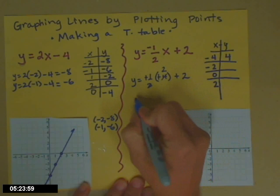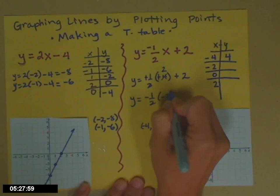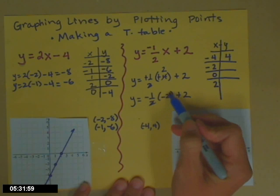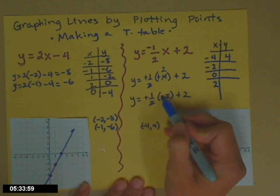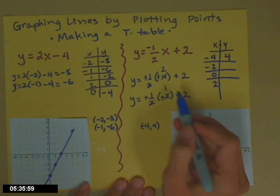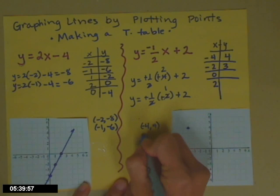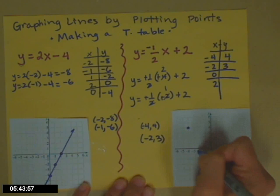If x is negative 2, y is negative 1 half times negative 2 plus 2. Again, the 2's cancel. Negatives cancel. That's a 1, not a 0. Be careful. 1 plus 2 is 3. So the ordered pair that we plot is the x, y pair. Negative 2, positive 3.